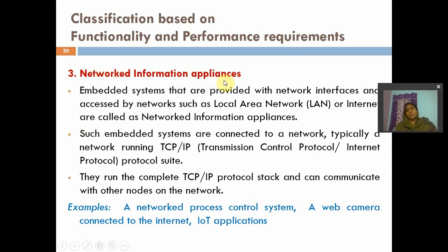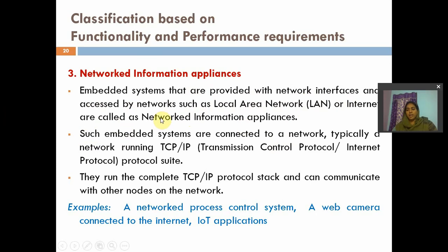Third category is network information appliances — embedded systems that depend upon the internet. For a washing machine or microwave oven, we don't need any internet. But network information appliances are embedded systems that depend upon internet connectivity. These embedded systems are provided with network interfaces and accessed by networks such as local area networks (LANs) and the internet. A weather monitoring system, which continuously monitors the weather, is an example of a network information appliance.